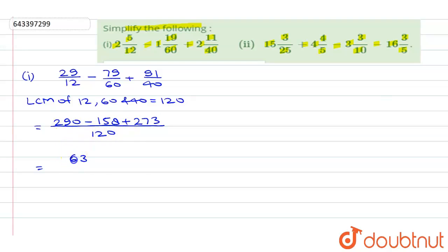When we add 290 and 273 we will get, 9 plus 7 is 16, and 2 plus 2, 4 plus 1, 5, 563 minus 158 upon 120. When we subtract this we will get here 13 minus 8 is 5, 5 minus 5 is 0, and 5 minus 1 is 4, so we'll get here 405/120.